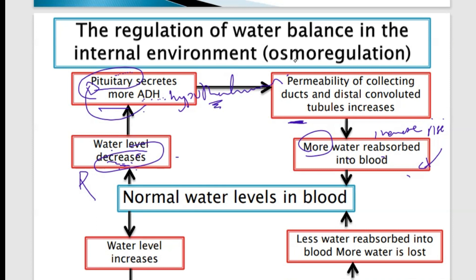The pituitary gland, or hypophysis — sometimes called hypophysis — please don't call it the master gland. If I ask you what is my name and you tell me 'teacher,' that's not my name, that's my job. So please don't call it master gland. Call it hypophysis or pituitary gland. Its name is pituitary gland or hypophysis.